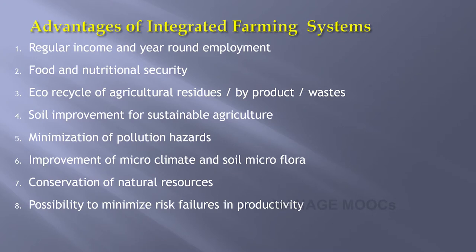Now we will see the different advantages of integrated farming system. The first and foremost advantage is regular income and year-round employment. Then there will be food and nutritional security. Then eco-recycling of agriculture residue, by-products, and waste. Moreover, there will be soil improvement for sustainable agriculture by following this integrated farming system approach.